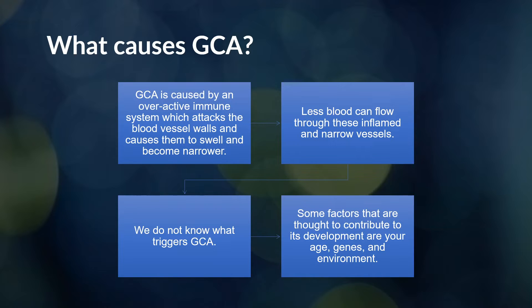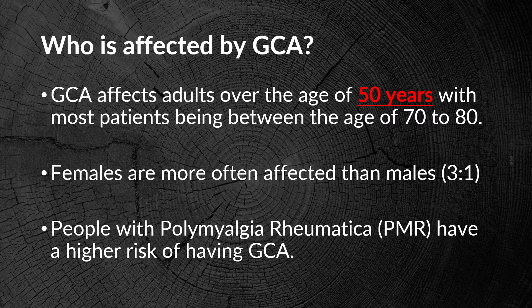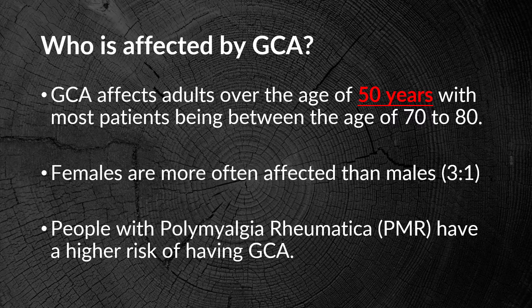Certainly age plays a role — we know it happens in older folks. There may be a factor for genes and environment, but we don't fully understand what that is. GCA almost exclusively happens in adults over the age of 50; it would be very unusual in someone younger than 50. It's probably most common between the ages of 70 and 80, and it affects females more often than males. Polymyalgia rheumatica is often seen alongside giant cell arteritis — a larger portion of people with GCA do end up having polymyalgia rheumatica at the same time.